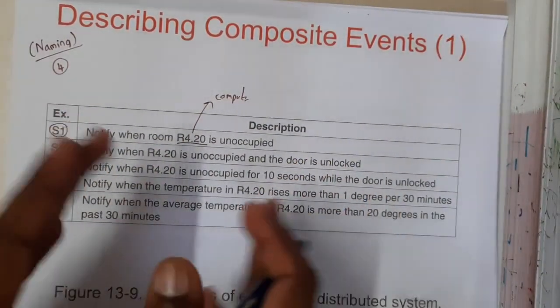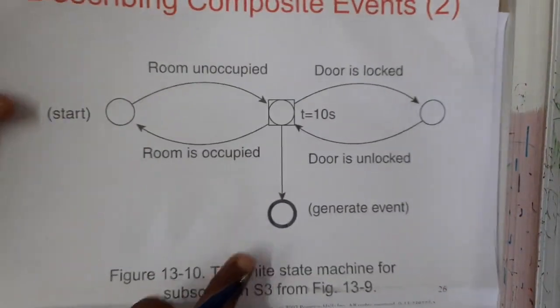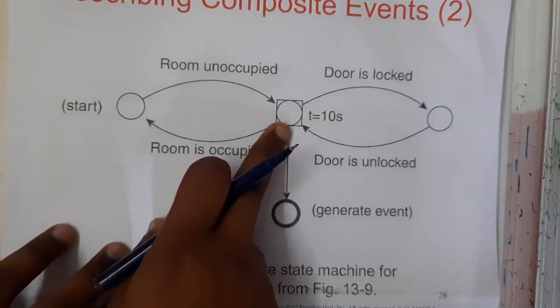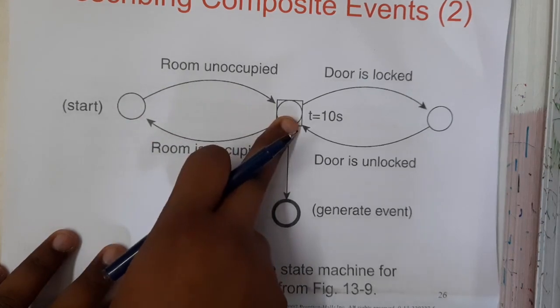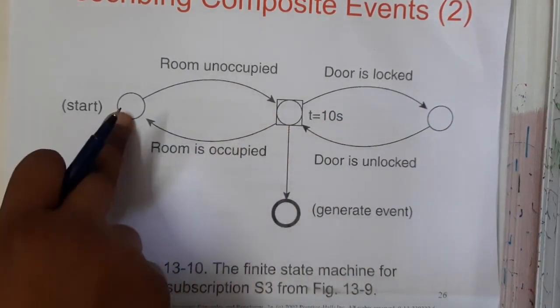So if you want an example, assume that this is your event generator. This is your room and this is your start. So basically you will be checking the room is unoccupied, then you will be locking it, then you will be unlocking it, then you will be occupying it.